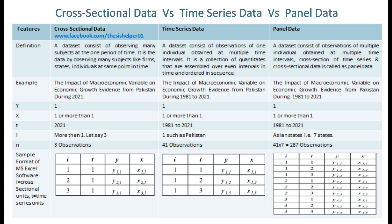The dependent variable Y in all types of data is 1. The independent variable X in all types of data is 1 or more than 1. The time series units T is 2021 in cross-sectional data, while T ranges from 1981 to 2021 in both time series data and panel data.